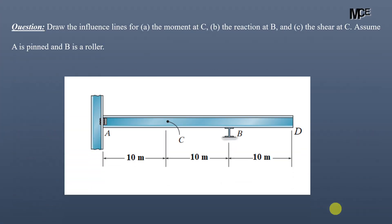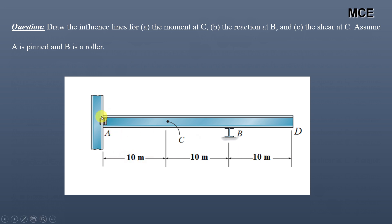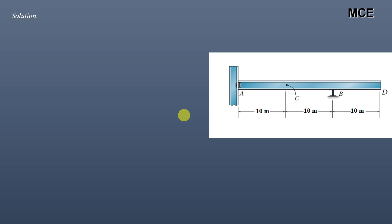Hello and welcome back to Master Civil Engineering. In this video you will learn how to draw the influence line for reaction, shear, and moment in a beam. We have to draw the influence lines for the moment at C, reaction at B, and shear at C, assuming that A is pinned and B is a roller. This is an overhanging beam having a total span of 30 meters with two supports.